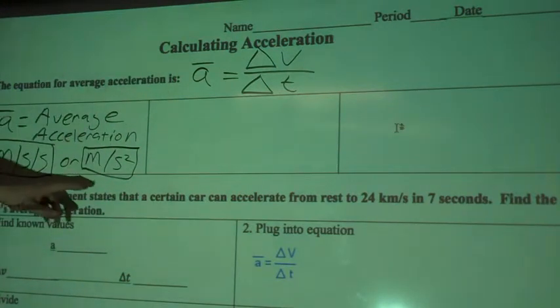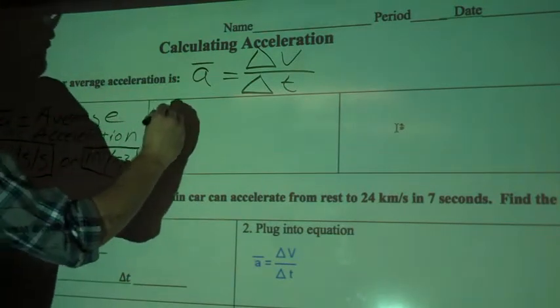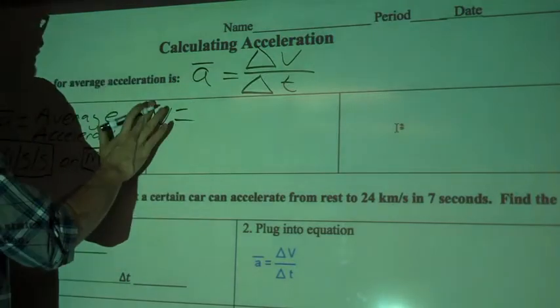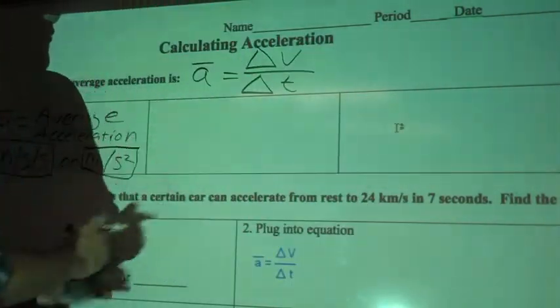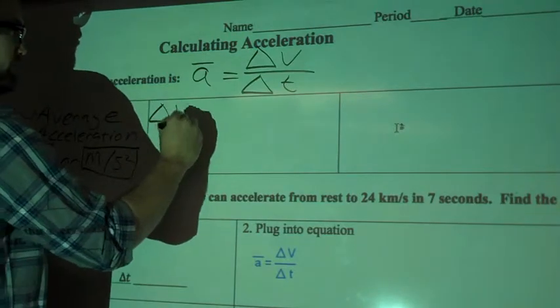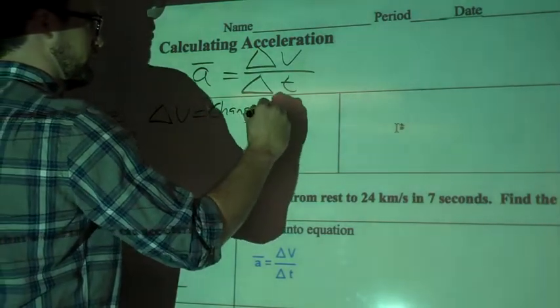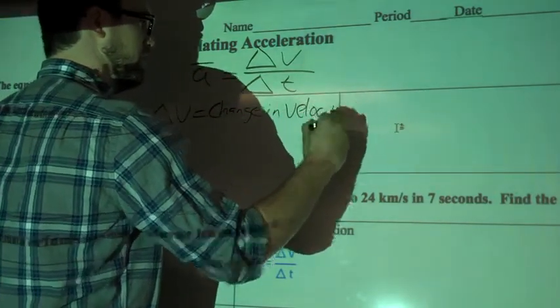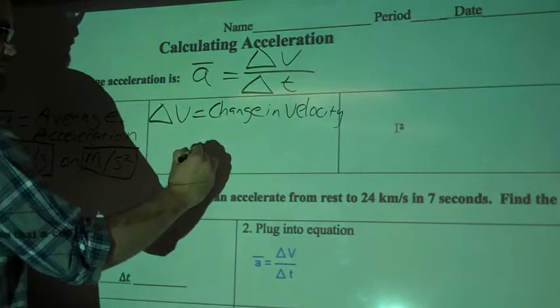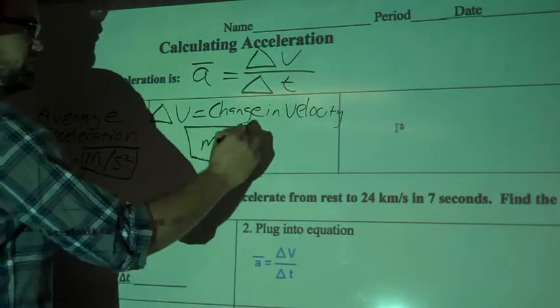So change in velocity. So velocity, we know very well, so this should be delta V, equals change in velocity. And that's going to be measured in meters per second, most often.